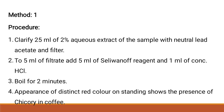There are two methods to determine chicory. Method 1: Clarify 25 ml of a 2% aqueous extract of the sample with neutral lead acetate and filter. Then to 25 ml of the filtrate, add 5 ml of Seliwanoff reagent and 1 ml of concentrated hydrochloric acid. Boil for two minutes — appearance of a distinct red color on standing indicates the presence of chicory in coffee.